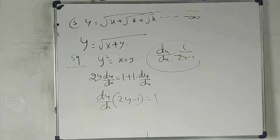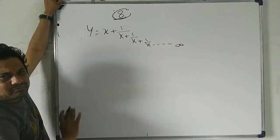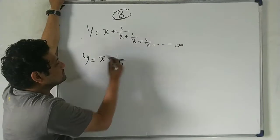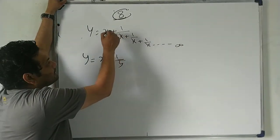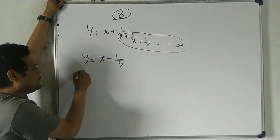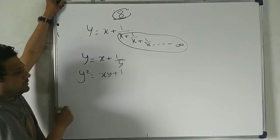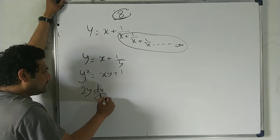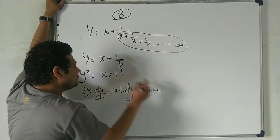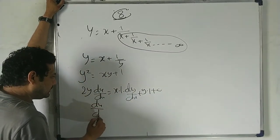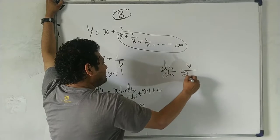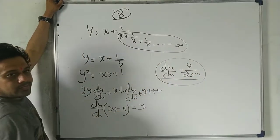Question number 8 — infinite series again: y = x + 1/(x + 1/(x + ...)). One term छोड़ दो तो: y = x + 1/y. Taking LCM: y² = xy + 1. Differentiating: 2y(dy/dx) = y + x(dy/dx). So dy/dx(2y − x) = y, giving dy/dx = y/(2y − x).